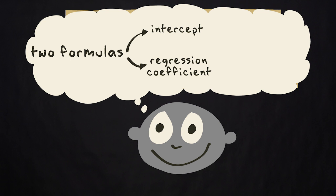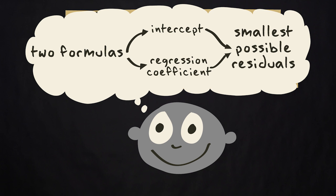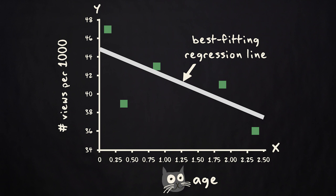These formulas give you the intercept and regression coefficient values that result in the smallest possible residuals. These produce the best fitting regression line, also called the least squares line.